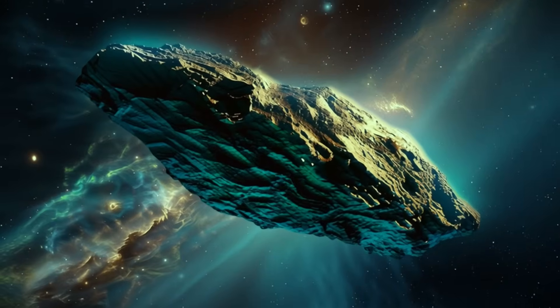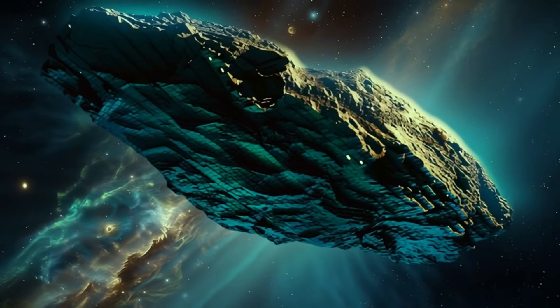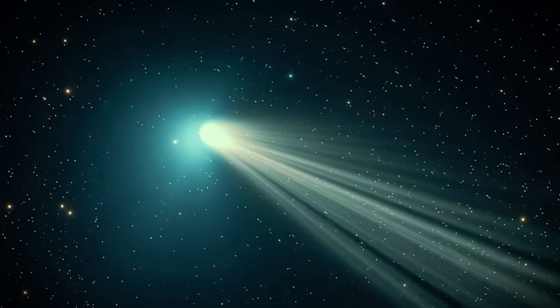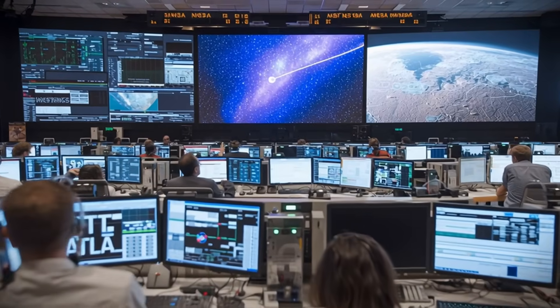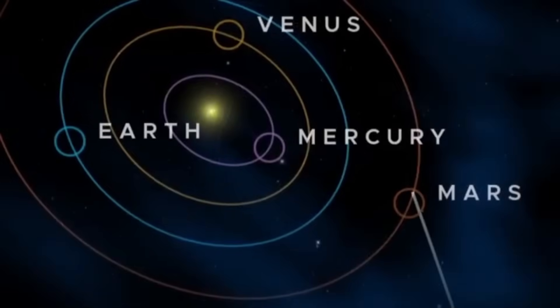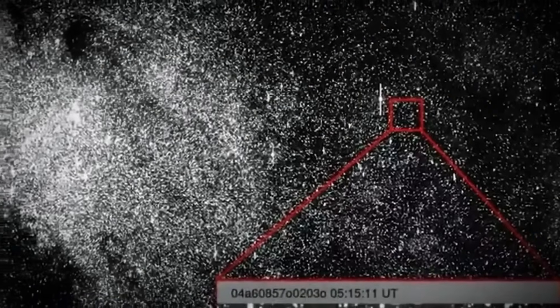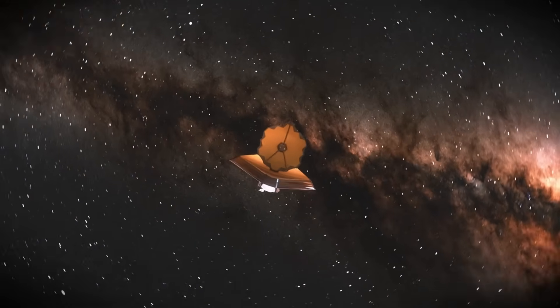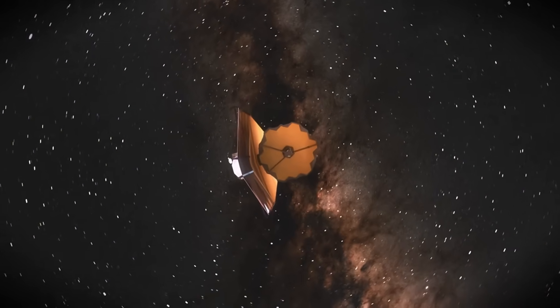Harvard astronomer Avi Loeb did the calculations using basic physics. If you know the acceleration and you know the object's mass, you can calculate how much gas needs to be ejected to create that push. Atlas weighs at least 33 billion tons. It's huge compared to the first two interstellar objects we found, somewhere between 1,000 and 1 million times more massive than Oumuamua or Borisov. Its core is estimated at about 3.5 miles, or nearly 6 kilometers. With that mass and that acceleration, the calculations show something remarkable.